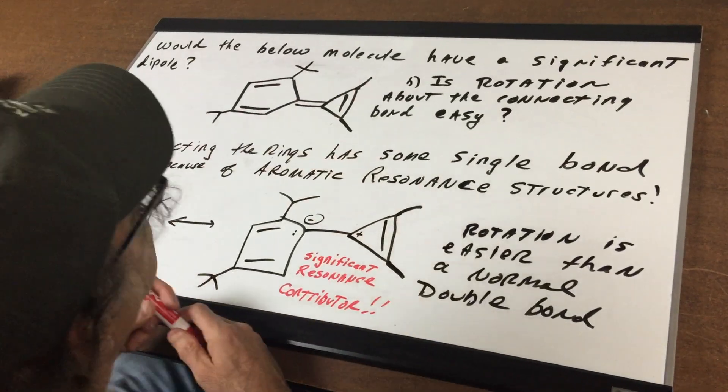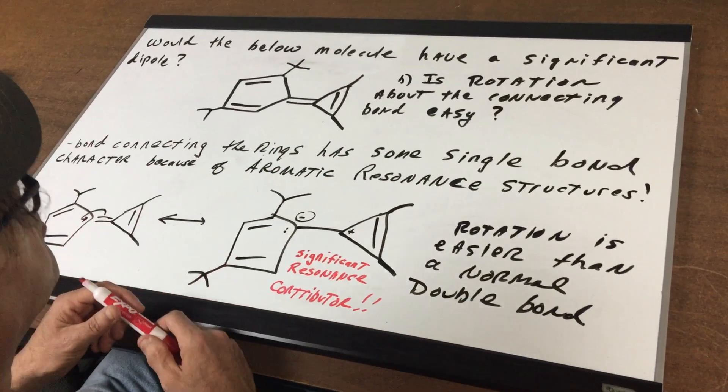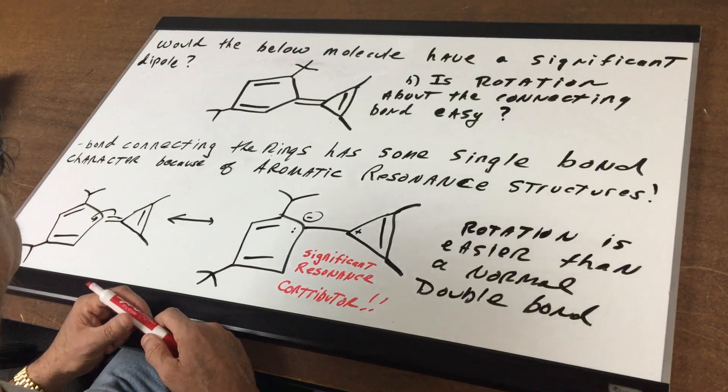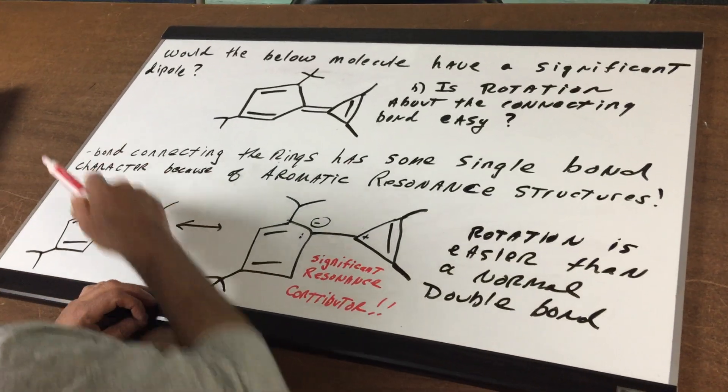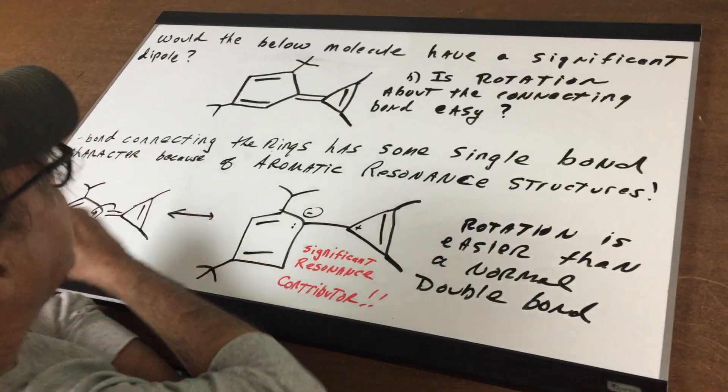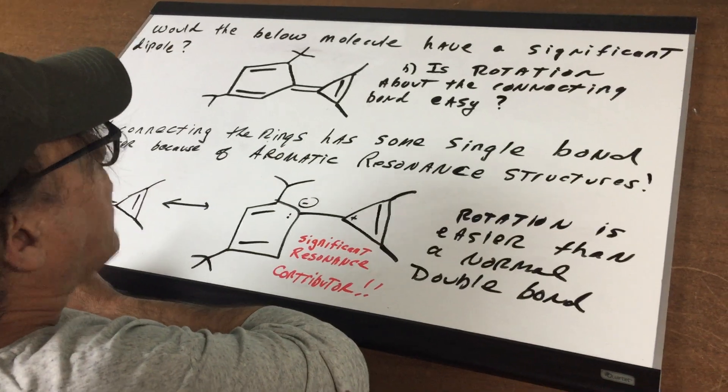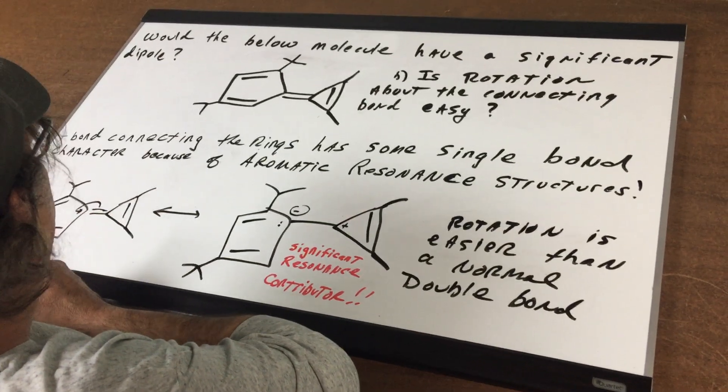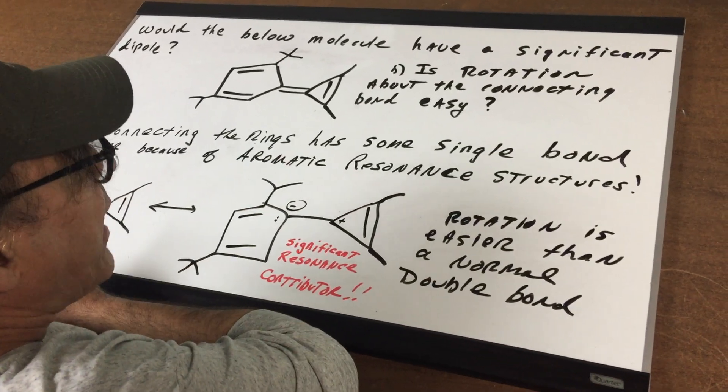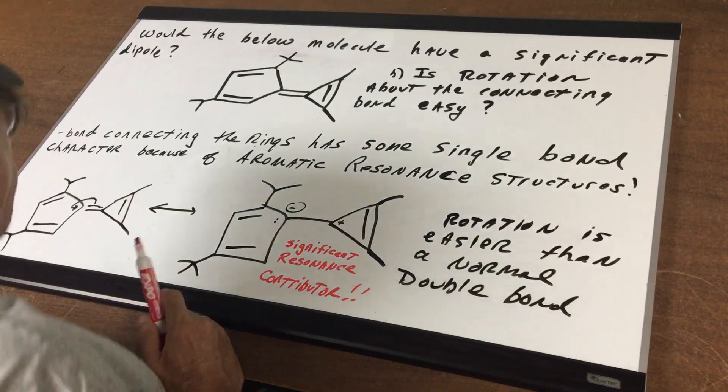Well when you first look at it you're probably gonna say no it's a double bond and you know there's no rotation around double bonds. I wrote here that a bond connecting the rings will end up having some single bond character because of aromatic resonance structures. Let's have a look.